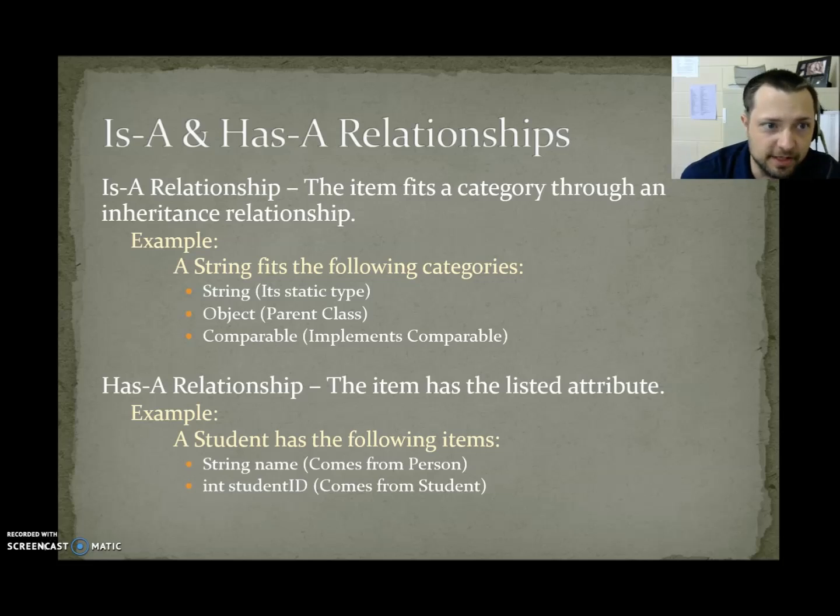Continuing on. Is-A and Has-A relationships. Is-A relationships. The first item fits a category through an inheritance relationship. String fits the following categories. String is its static type. Object would be the parent class of string. And, string implements comparable, so it also fits the category of a comparable. It agrees to write all the methods listed in comparable, so it fits three categories. A string is a string, it's an object, and it's a comparable.